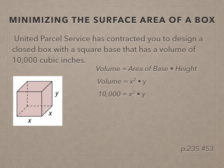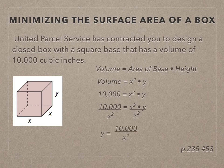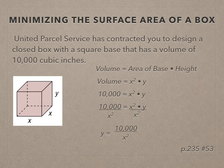I'm thinking that later on I will probably need to rewrite y in terms of x. So I'm going to divide both sides by x squared and I'll get an expression for y: 10,000 over x squared. And that might become useful later on.